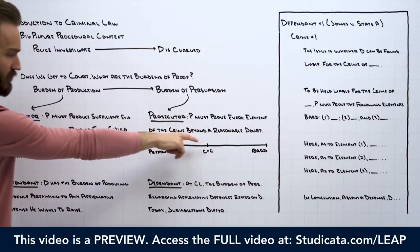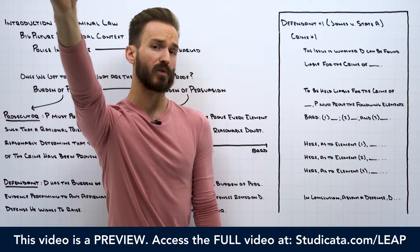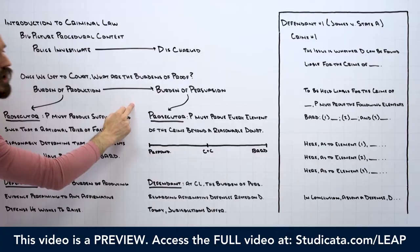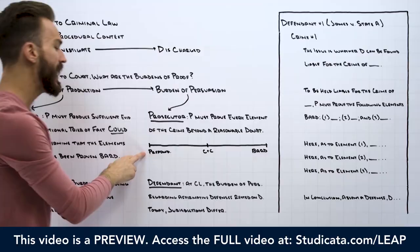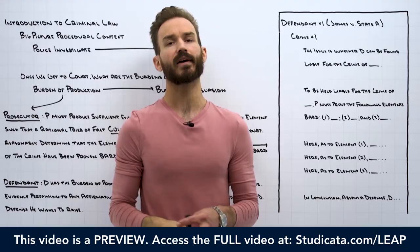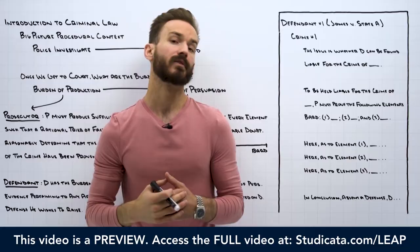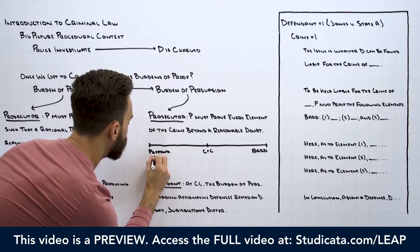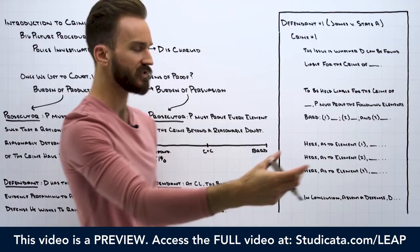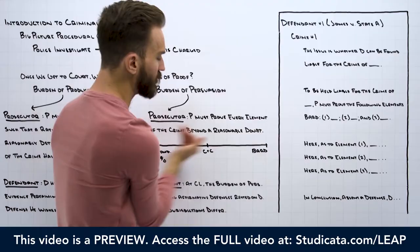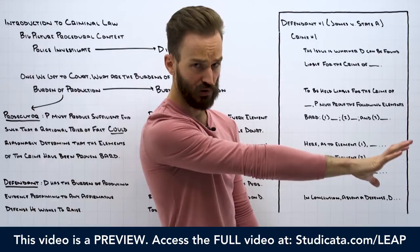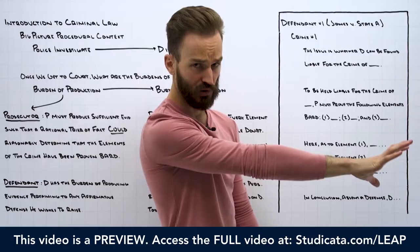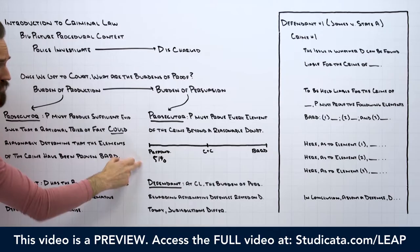Beyond a reasonable doubt is one of the highest burdens we have in U.S. law — a very, very high standard. When we say the prosecution must prove every element of the crime beyond a reasonable doubt, that's way more than preponderance of the evidence. In civil cases, the plaintiff generally has the burden of proving each element by a preponderance of the evidence. You can think of preponderance as more likely than not — or if you want to attach a percentage, anything over 50%, so 51% would satisfy preponderance.